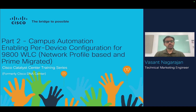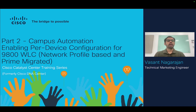We'll be focusing on two setups here. One is where the 9800 controller is configured using network profiles and site assignment on Catalyst Center. Second is where the 9800 wireless controller is being migrated from Cisco Prime onto Catalyst Center.